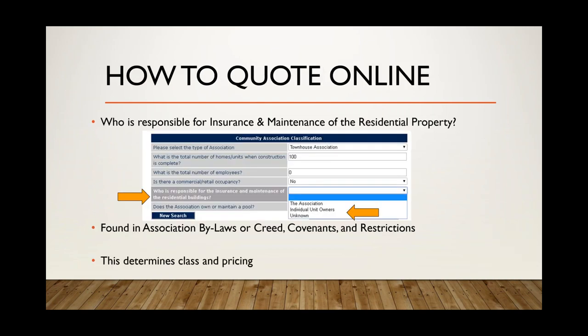For how to get a quote online, the most important question you'll encounter asks who is responsible for the insurance and maintenance of the residential property. This can be found in the association bylaws, covenants, and CC&Rs. We rate it as a condo association if the association is responsible for the insurance and maintenance of the residential buildings. If the individual unit owners are responsible, we rate it as a homeowners association. This determination drives the class and pricing for your quote.